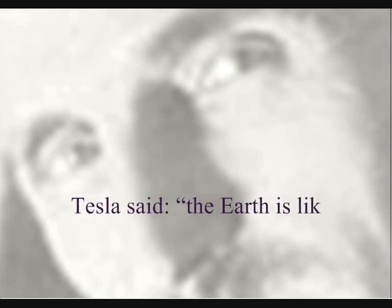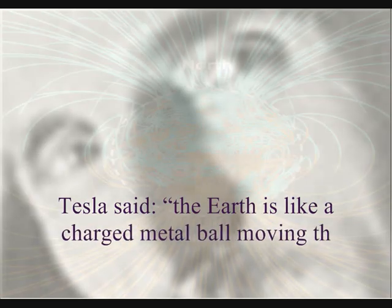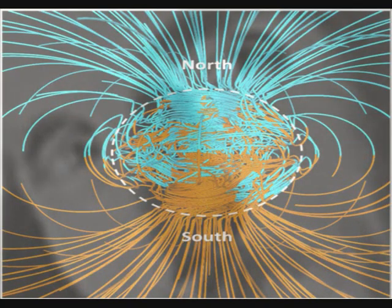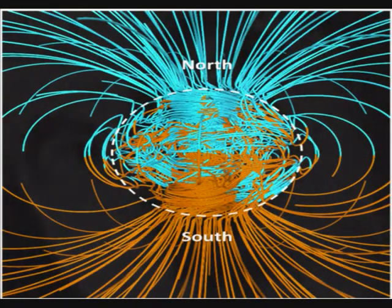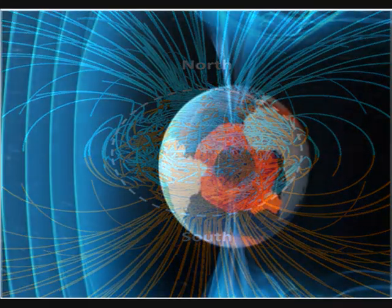Tesla said the Earth is like a charged metal ball moving through space. The truth of this statement can be seen by looking at the Earth's electromagnetic field, which is relative to the rotation of the Earth and its position to the Sun.